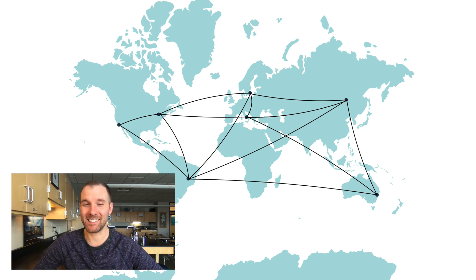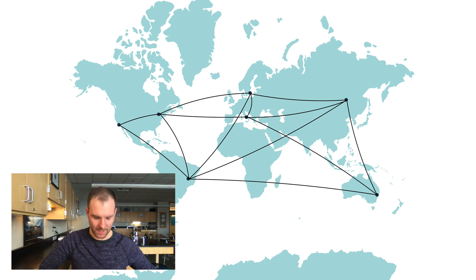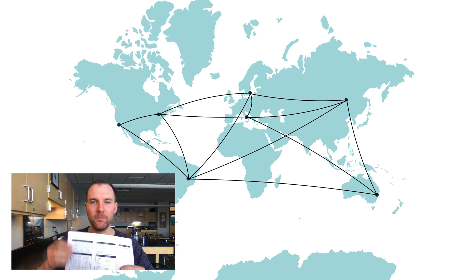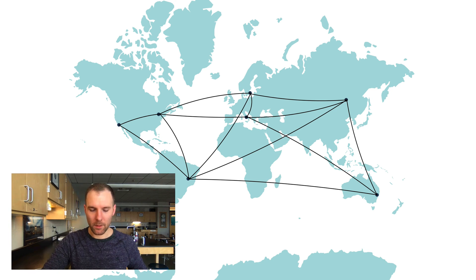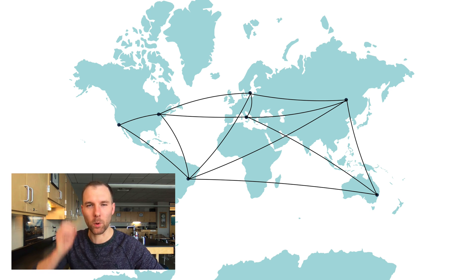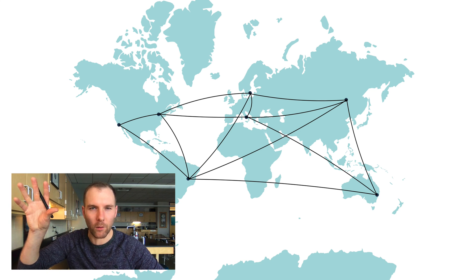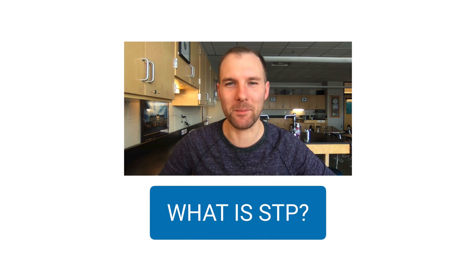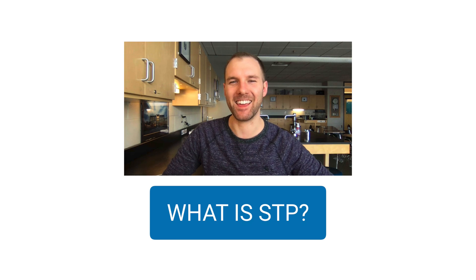STP is given to you on your reference tables — it's table one, standard temperature and pressure. A lot of the problems we'll do in this unit and in units beyond are going to reference STP, so it's important to know that's 273 Kelvin and one atmosphere. That's what STP is.